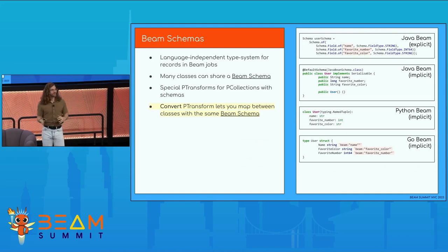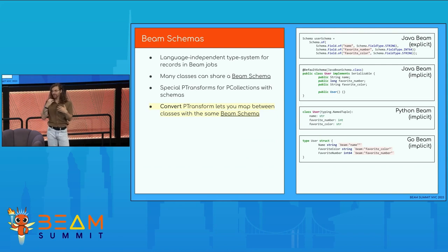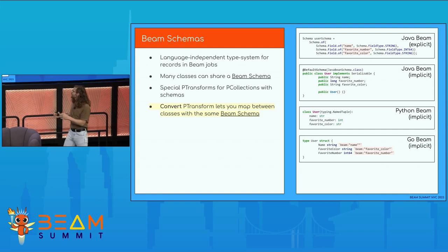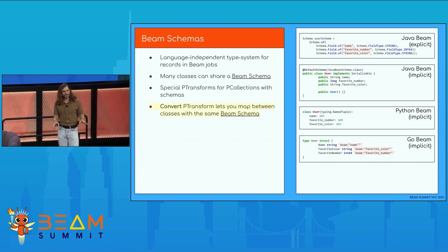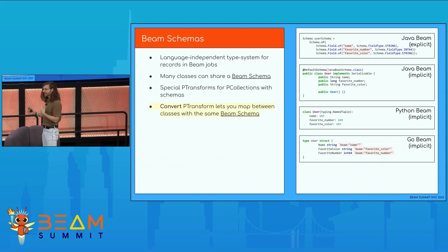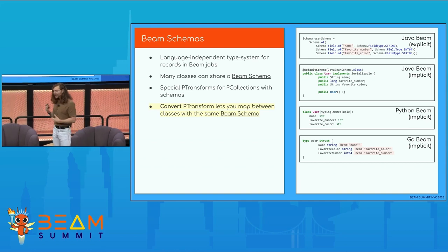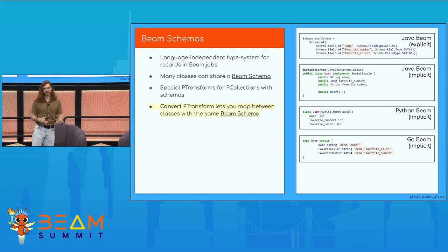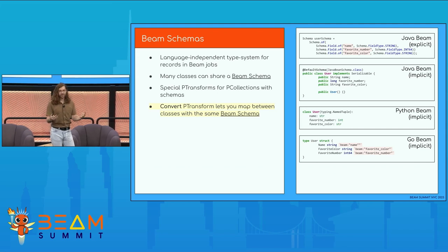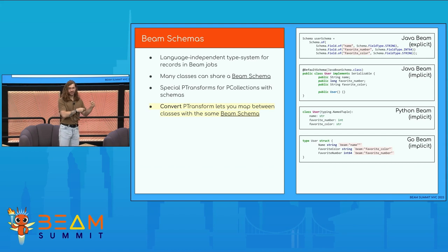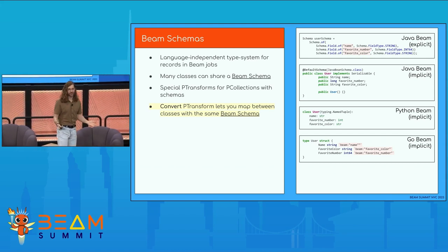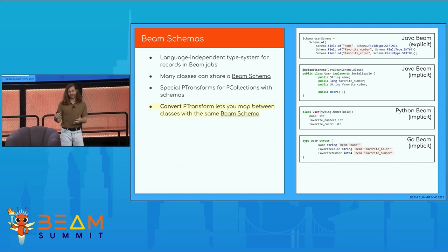Beam schemas are different from Avro schemas. Avro schemas define your Avro type, while a Beam schema is what we call a schema assigned to a data type within a PCollection — it's a language-independent type system for Beam. It lets you do some interesting things with multi-language pipelines. One really nice thing is that many classes can share the same schema, and it opens up some really nifty PTransforms. The really big one for me is Convert — if you have two classes that share the same schema, you can easily translate from one class into another.